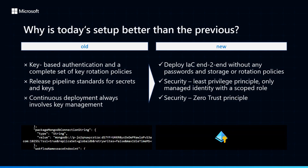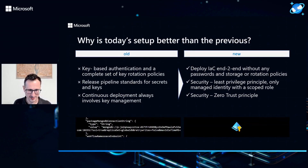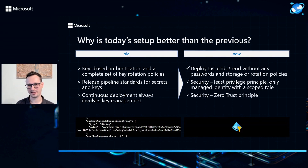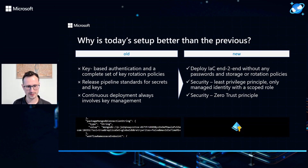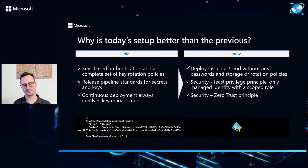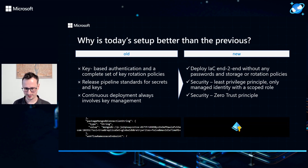It just doesn't have to have more rights than it uses, and that applies to any zero trust principles you might have in place. As a practical example, there's a Microsoft example that uses managed identities for deployment purposes but still relies on connection strings. As you can see in the deployment template excerpt, it's a clear-text representation of the user and password used in the connection string with the MongoDB endpoint — which is exactly the kind of risk we're eliminating.